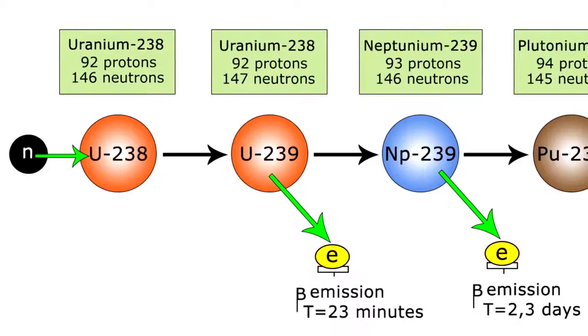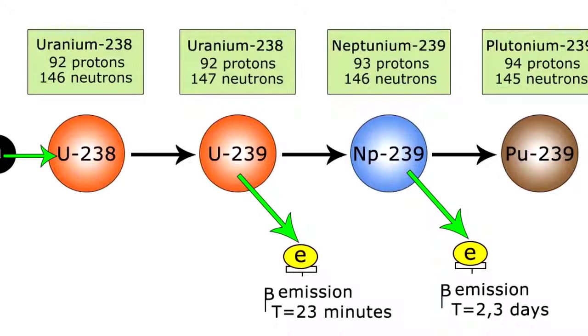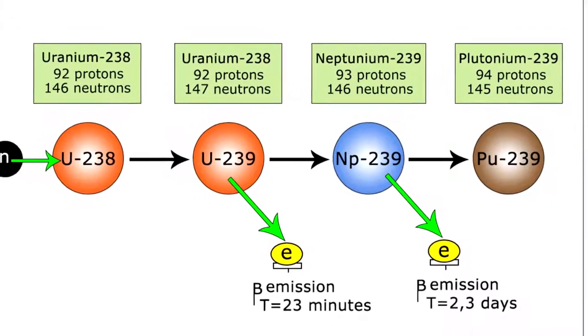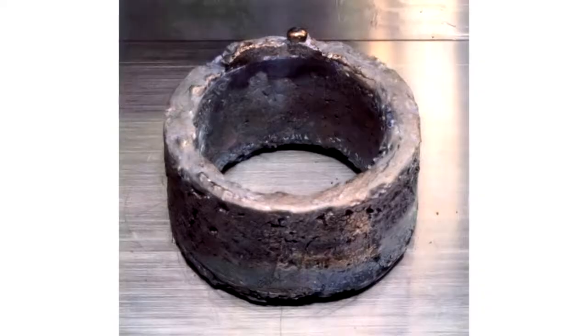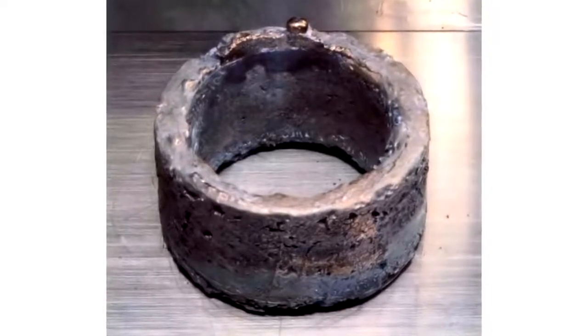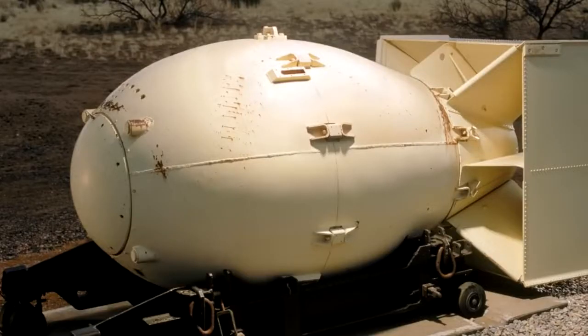Besides, in a nuclear reactor, uranium-238 can be turned into plutonium-239 by irradiation with slow neutrons. It's known that plutonium-239 is fitting for making implosion-type atomic bombs because its critical mass is smaller.